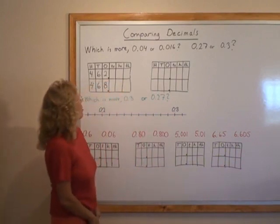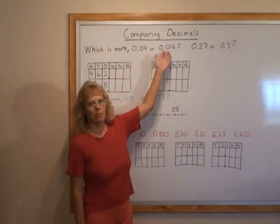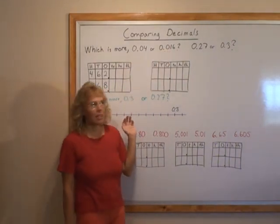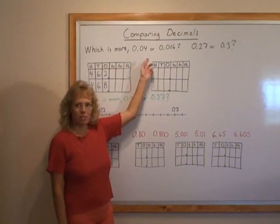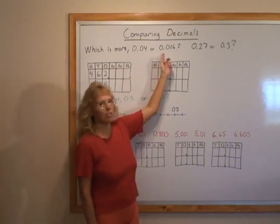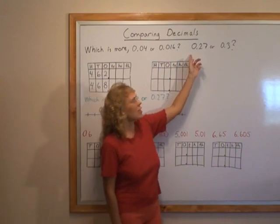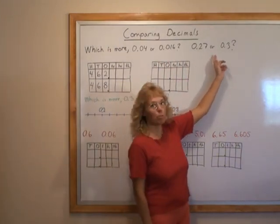I wrote a question, which is more, this or this decimal? If we read it like many people read them, it would be 0.04 or 0.016. Which is more, 0.27 or 0.3?